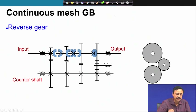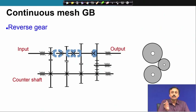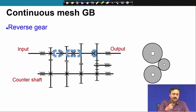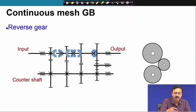This is the continuous mesh gearbox. The advantage is that you do not have the gears coming in and out of mesh, which causes a lot of wear and damage. Here it is the dog clutch which takes that load, while the gears remain in continuous mesh. As a result, sound, vibration, and noise are much reduced.